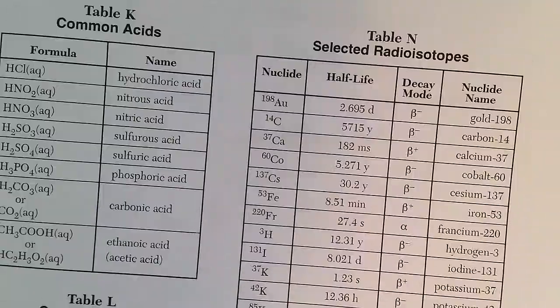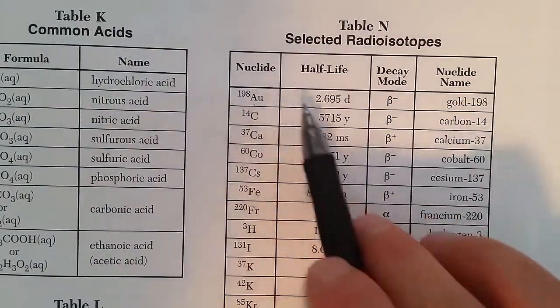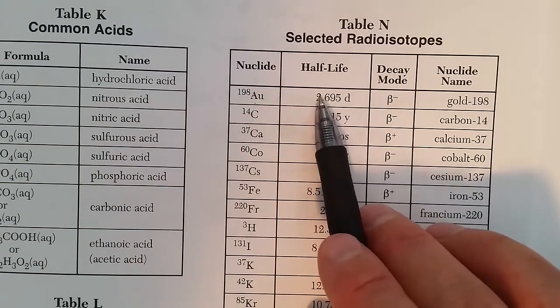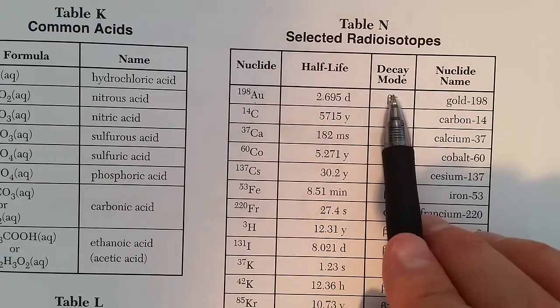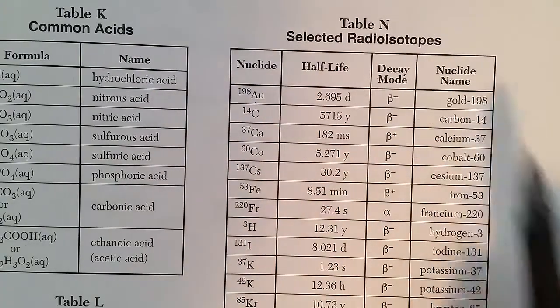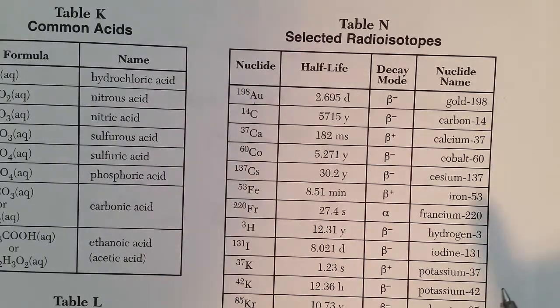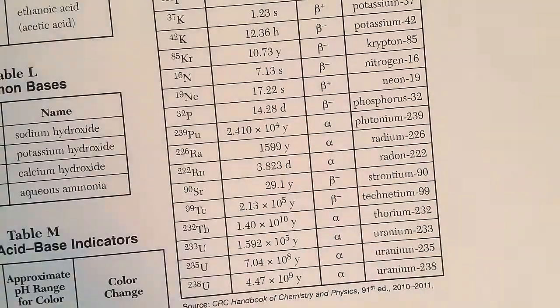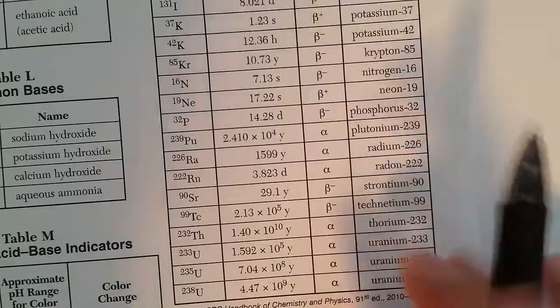We see examples on Table N. Selected radioisotopes shows the nuclide, then gives us half-life we'll get to in a minute, and its decay mode. Let's look at some of these types of natural decay.